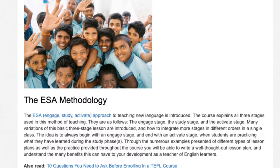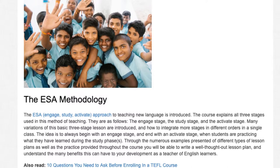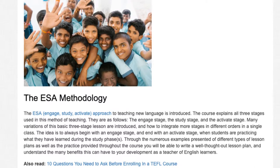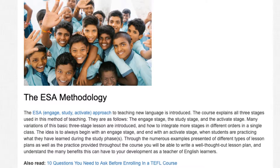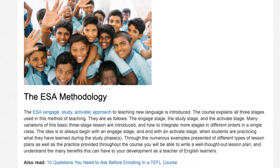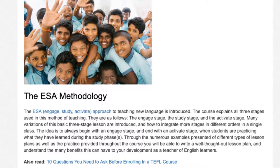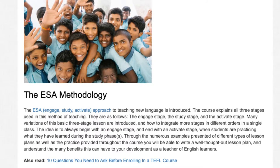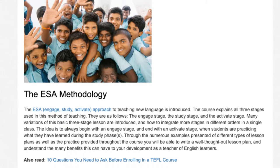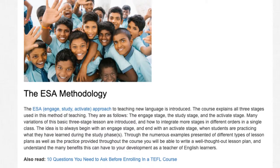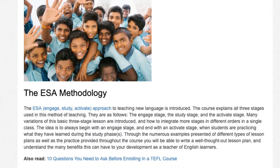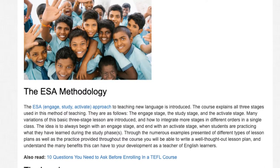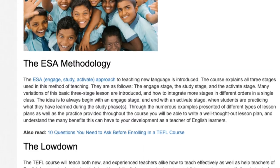The course explains all three stages used in this method of teaching: the Engage Stage, the Study Stage, and the Activate Stage. Many variations of this basic three-stage lesson are introduced, including how to integrate more stages in different orders in a single class. The idea is to always begin with an Engage Stage and end with an Activate Stage, when students are practicing what they have learned during the study phases. Through the numerous examples presented of different types of lesson plans, as well as the practice provided throughout the course, you will be able to write a well-thought-out lesson plan and understand the many benefits this can have to your development as a teacher of English learners.